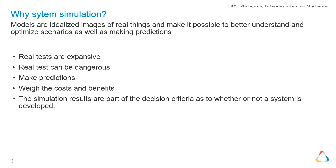That's the basic idea of why we do this — because real tests are expensive. Imagine you develop an aeroplane and at the first test it crashes; that's going to be very expensive. Real tests can also be dangerous, which is a serious situation for a pilot. We want to make predictions using system simulation, not just for physical reasons but also for economical reasons — we can weigh the costs and benefits of our idea. If the simulation results are good and the system seems promising, this is also part of the decision criteria for whether a system will be developed.